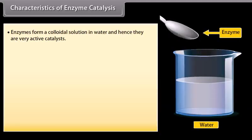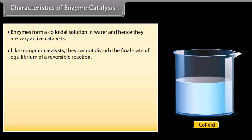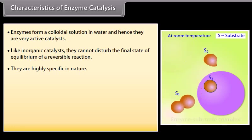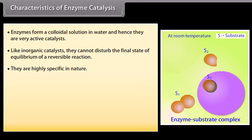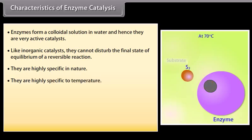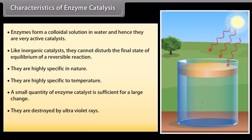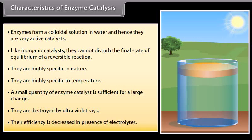Enzymes form a colloidal solution in water and hence are very active catalysts. Like inorganic catalysts, they cannot disturb the final state of equilibrium of a reversible reaction. They are highly specific — one enzyme cannot catalyze more than one reaction. They are highly sensitive to temperature; the optimum temperature for their activity is 35°C to 40°C, and they are deactivated at 70°C. A small quantity of enzyme catalyst is sufficient for a large change. They are destroyed by ultraviolet rays, and their efficiency is decreased in the presence of electrolytes.